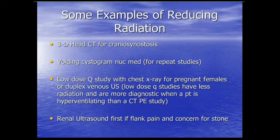A duplex venous ultrasound carries no radiation penalty and is not dependent on patient cooperation — even if the patient is hyperventilating, you can almost always get a diagnostic study. I've seen PE studies ordered for positive Homans sign or redness and swelling of the lower extremity. A lot of the PEs I pick up are small subsegmental branches, but a real DVT in a femoral or popliteal vein is much larger and can cause much more damage — so get a duplex ultrasound first. For flank pain with concern for stone, a renal ultrasound is a good screening tool before jumping to a CT stone protocol.